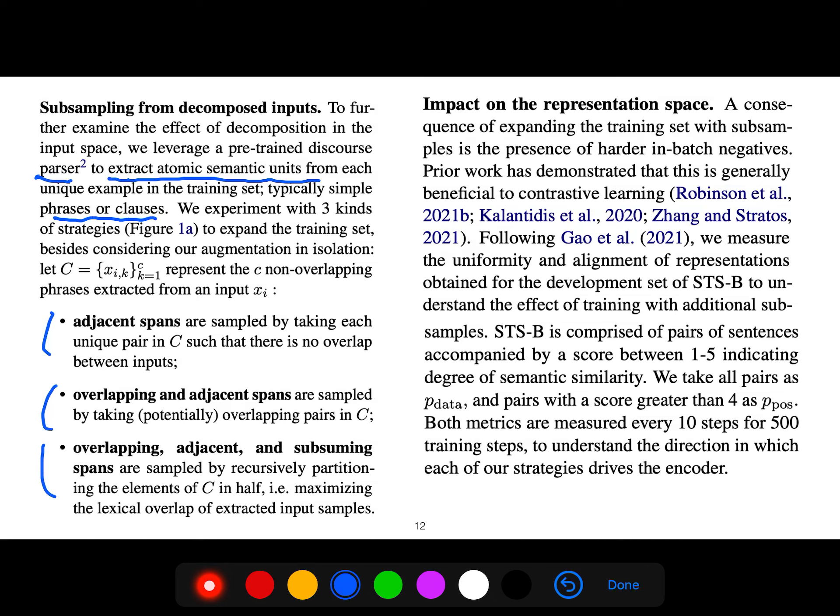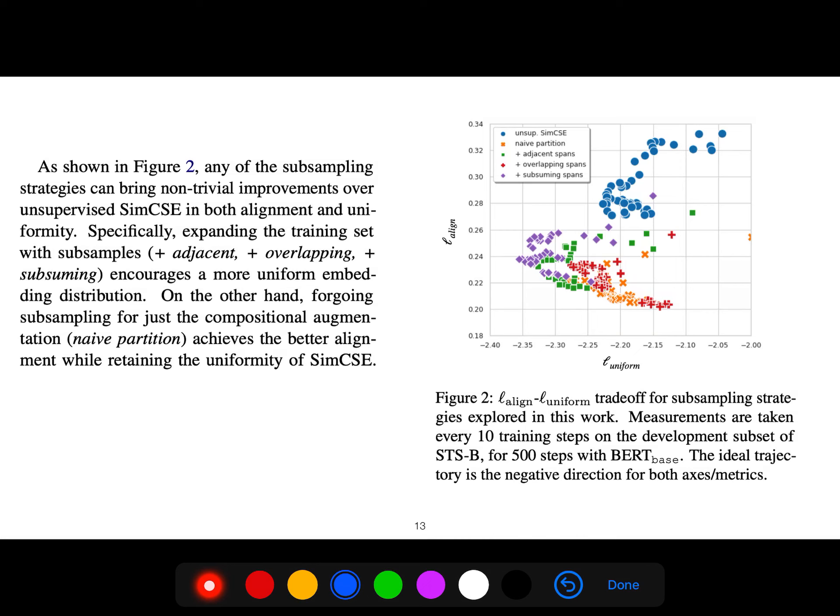It's an impact on the representation space. A consequence of expanding the training space with subsamples is the presence of harder in-batch negatives. Prior work has demonstrated that this is generally beneficial to contrastive learning. We measure the uniformity and alignment of representations obtained for the development set to understand the effect of training with additional subsamples.